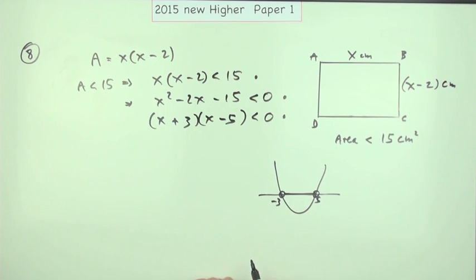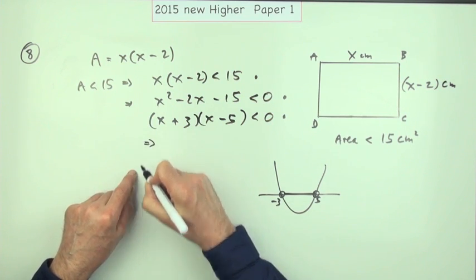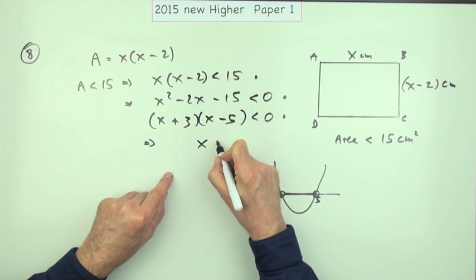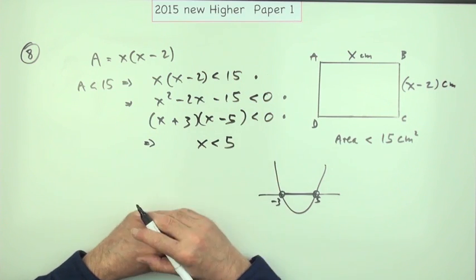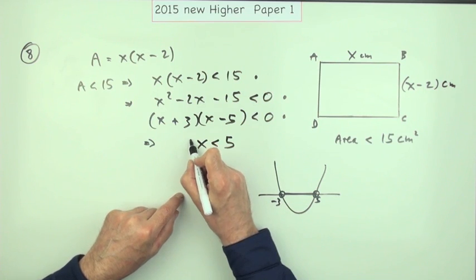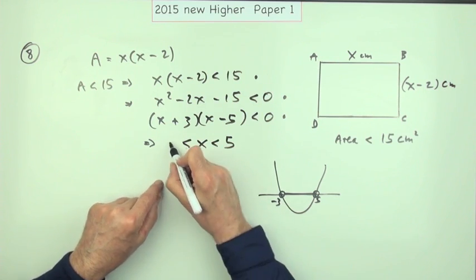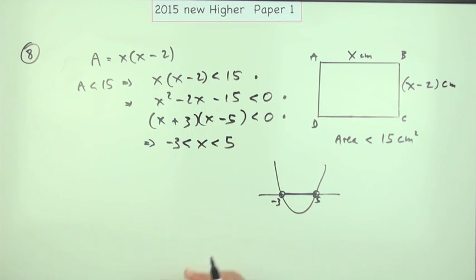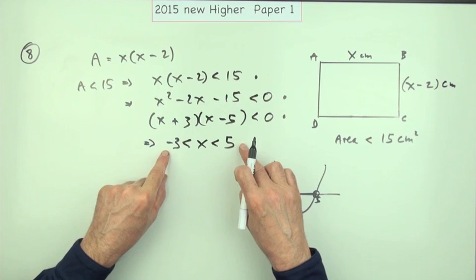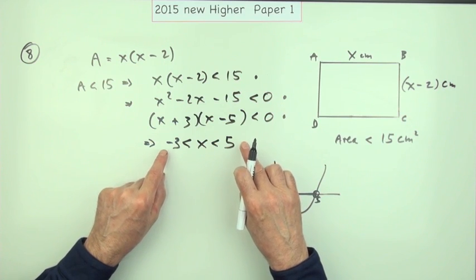So the answer to this would be x is less than 5 but greater than -3. And you could combine that in one statement. But when you've got these real situations, you have to check if these numbers make sense.